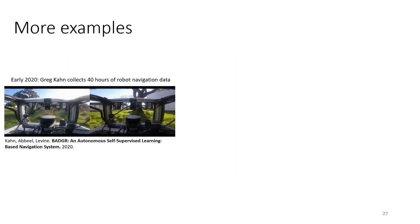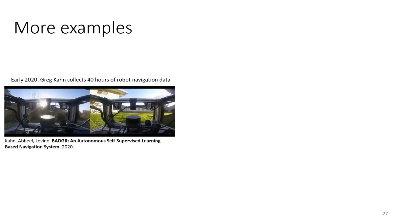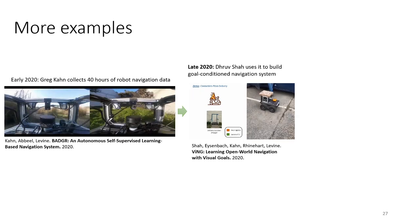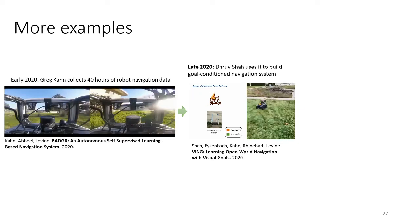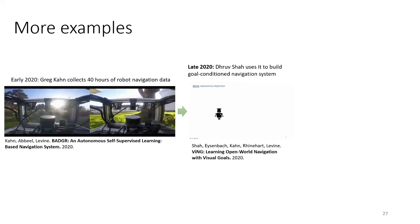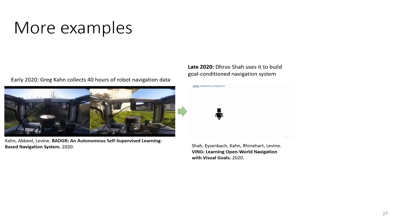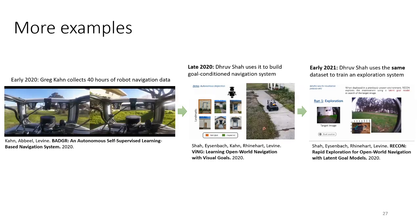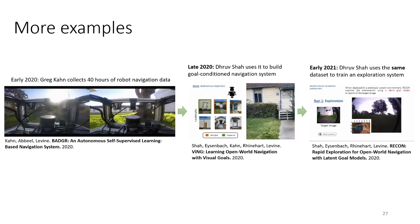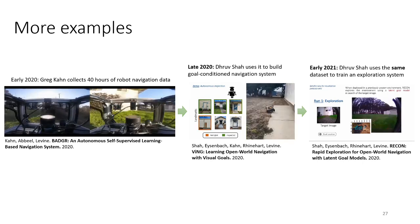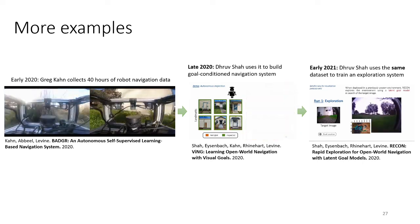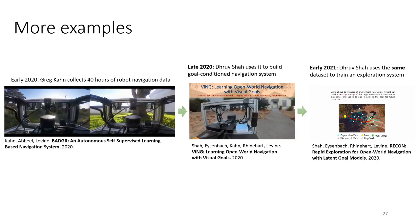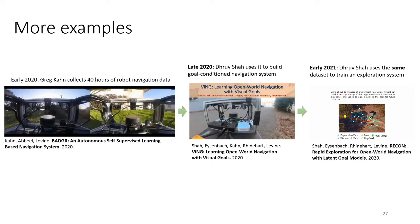Here's another robotics example. In 2020, Gregory Kahn collected a dataset of about 40 hours of off-road navigation using a small ground robot. In late 2020, Dhruv Shah used the same data to build a goal-conditioned navigation system that could do things like deliver mail or deliver a pizza — without collecting any new data, just reusing it with offline RL. In early 2021, Dhruv could use the same dataset to train a policy that would learn to search for particular goals in an environment. This illustrates one of the benefits: offline RL lets you test out hypotheses very quickly in the real world, without additional real-world data collection, while sticking to real data without relying entirely on simulation.